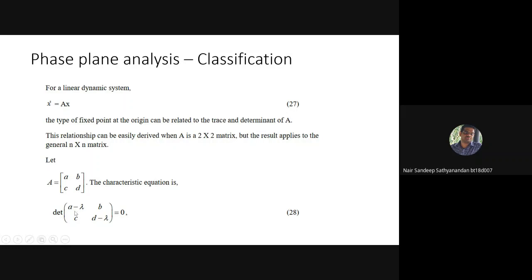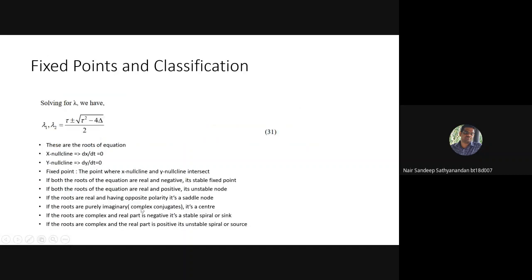Now calculating the determinant using an eigenanalysis: the determinant of (A minus lambda I) equals zero. So the matrix becomes [a-lambda, b; c, d-lambda], and we equate the determinant to zero. From this we obtain lambda_1 and lambda_2 using the standard polynomial equation and find the roots.